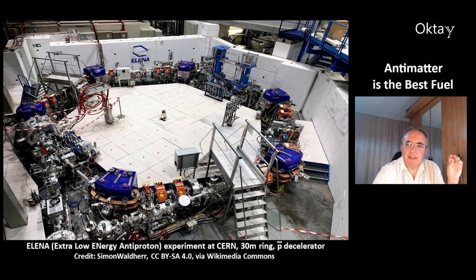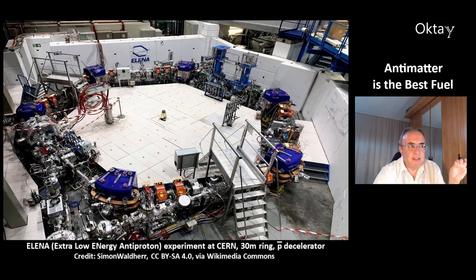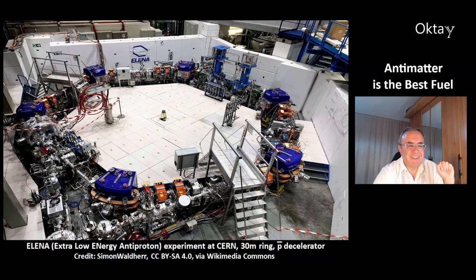This is ELENA — the Extra Low ENergy Antiproton experiment at CERN. It has a 30-meter ring, an antiproton detector, and a decelerator.